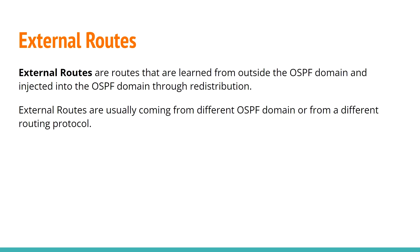The last type of routes in an OSPF domain is external routes. External routes are routes learned from outside the OSPF domain and injected into it through redistribution. They are usually coming from a different OSPF domain or from a different routing protocol.